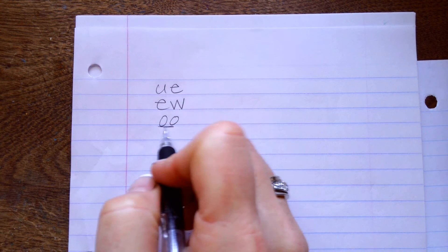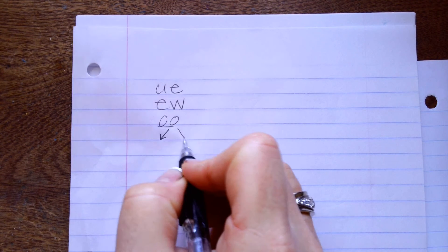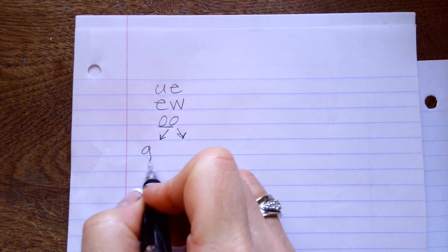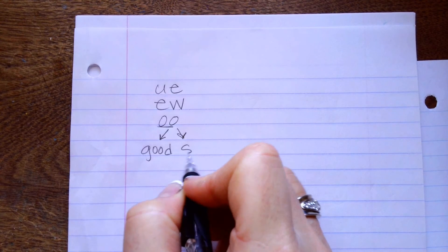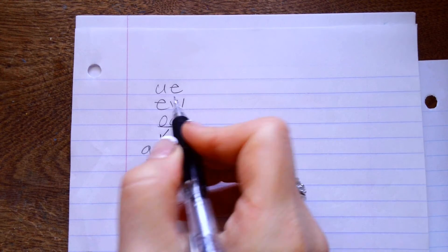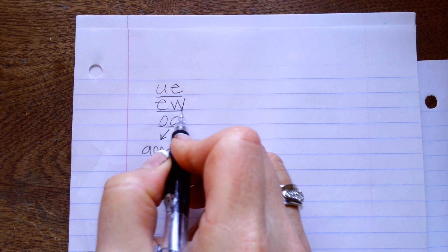But here's a tricky thing. We are starting to get into a little bit trickier blends sometimes. So OO actually makes two sounds. It makes good and it makes scoot. So this one makes OO, this one makes OO.